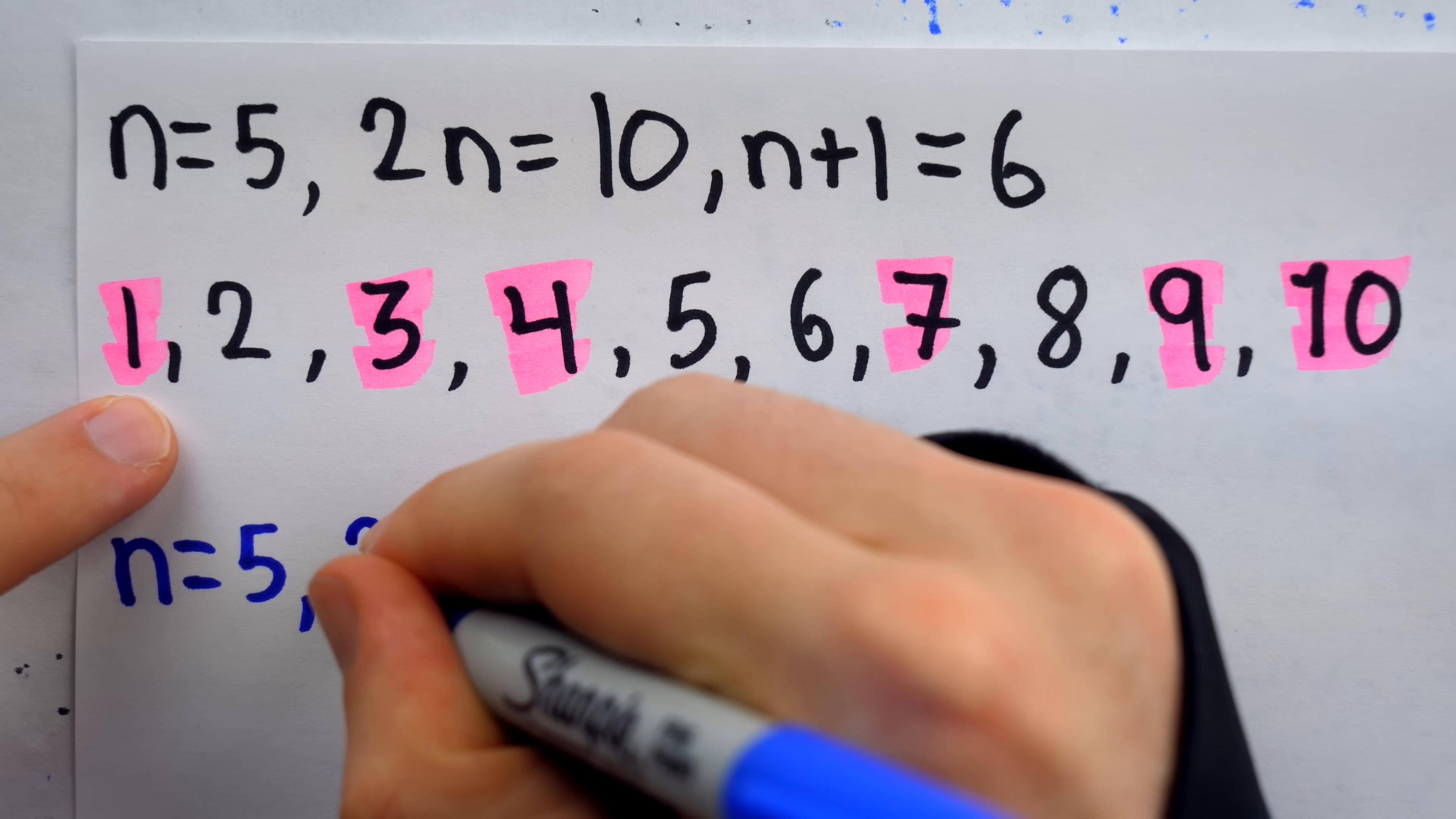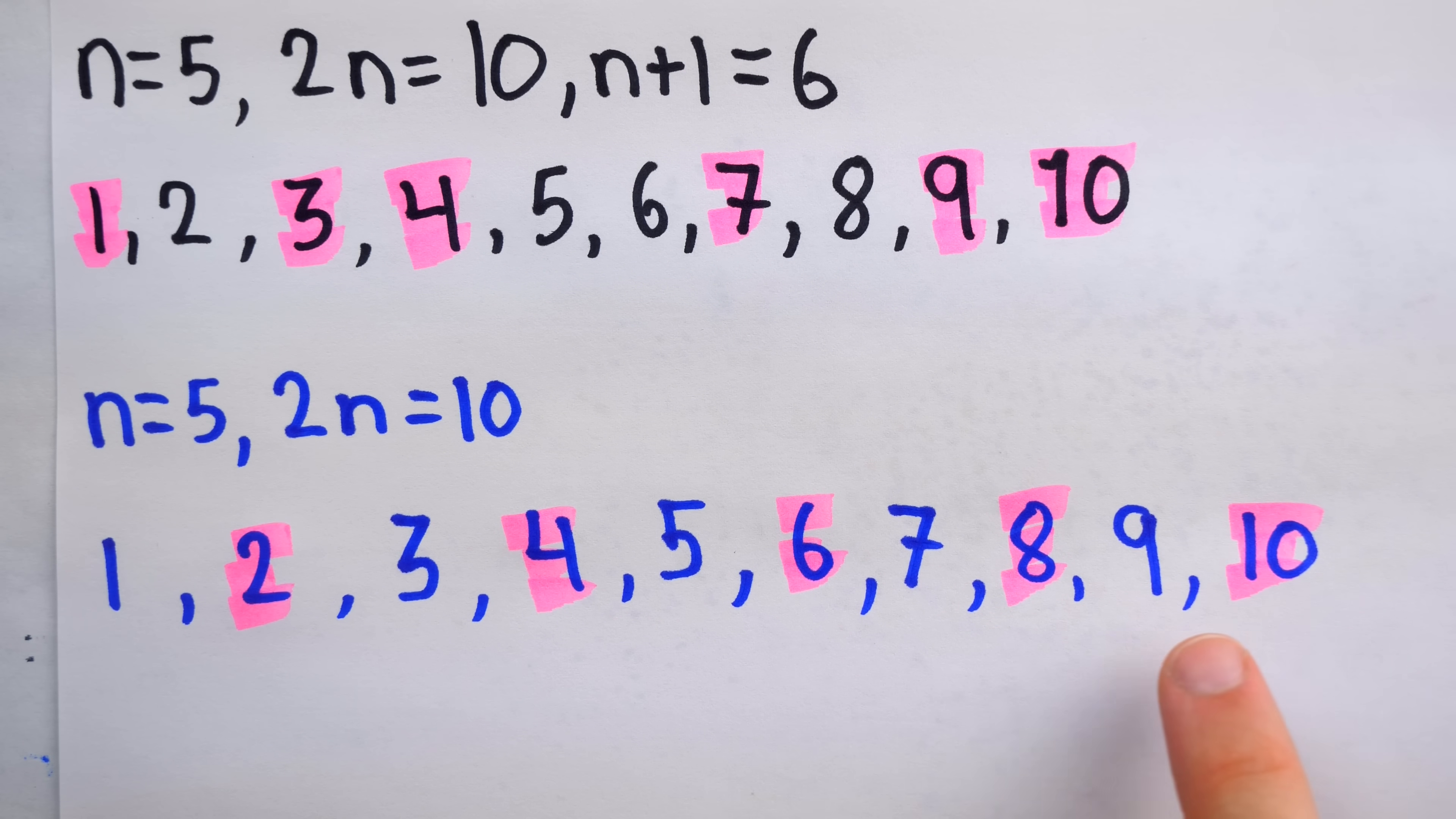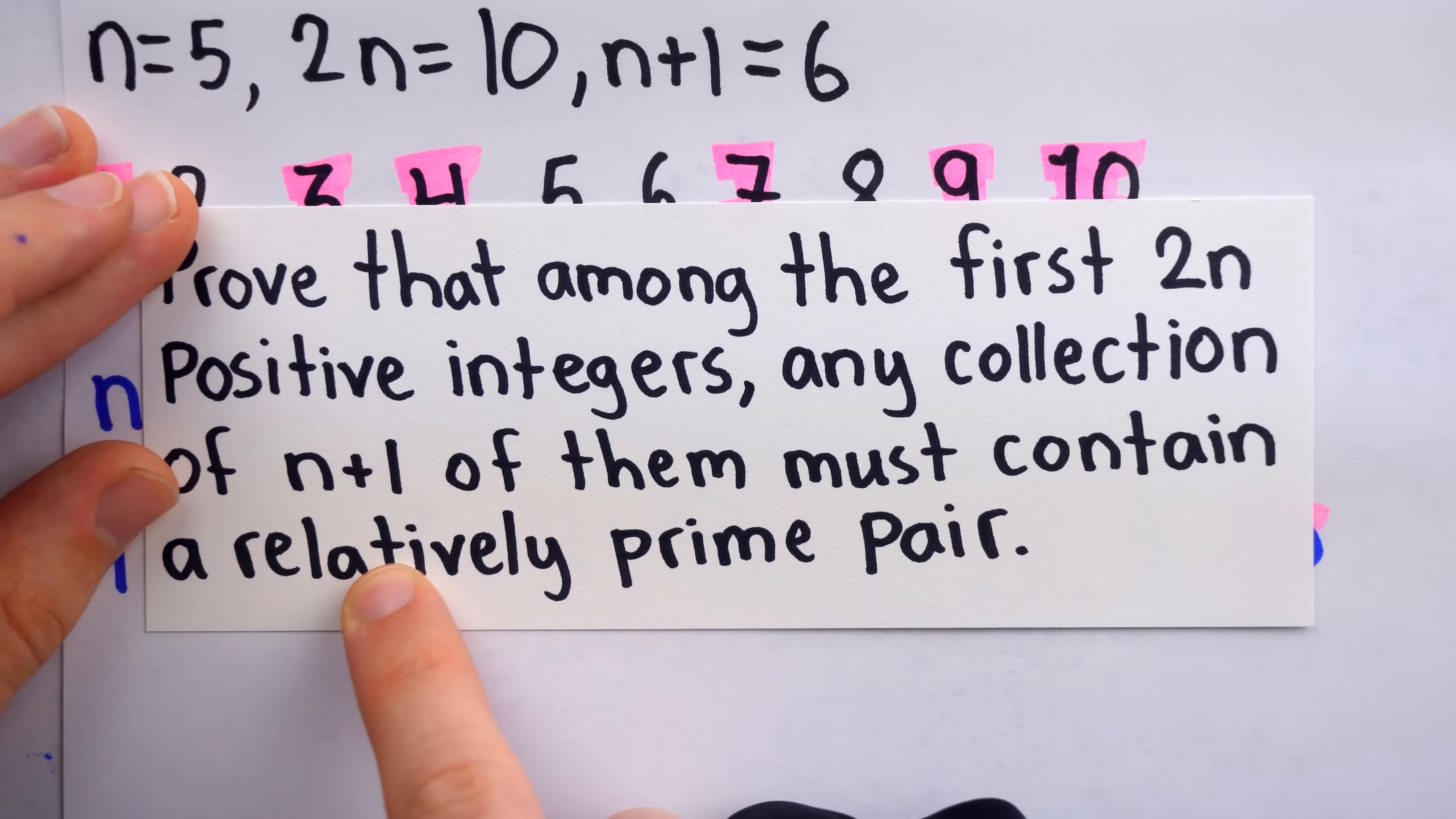Let's try this again with n equals 5, so 2n equals 10. But let's say we're only going to select 5 integers instead of 6. Again, we're selecting among the first 10 positive integers. And now, since we're only selecting 5, we could select 2, 4, 6, 8, and 10. And now we have a collection of 5 positive integers among the first 10, where no pair in our collection is relatively prime. We know that because we've only selected evens, so no two of them will be relatively prime. They all have a factor of 2 in common. Again, this is simply to say that if we were only required to have a collection of n positive integers, the result wouldn't follow. But since we specifically require n+1 integers, that's what forces this to be true.